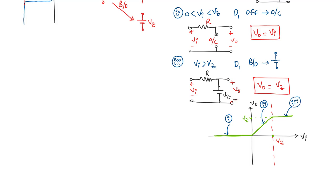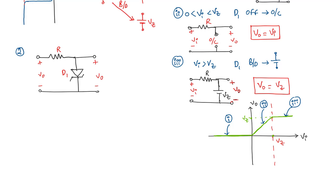Similarly, we are going to take a second circuit where the zener diode is simply reversed. The circuit looks like this. Let us proceed to the analysis.